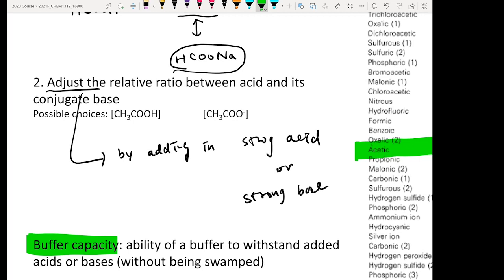Because only when you have a large amount of this conjugated acid-base pair can they interact with added strong acids or bases to minimize the change in your pH. If you only have a very small amount of the conjugated acid-base pair in your solution,